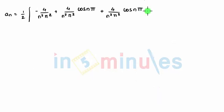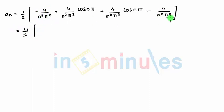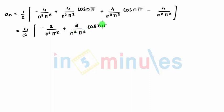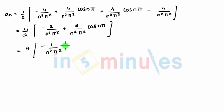Taking 1/2 outside and combining: −4/(n²π²) − 4/(n²π²) gives −2·4/(n²π²) after factoring. Then we have 4/(n²π²)·cos(nπ) + 4/(n²π²)·cos(nπ) terms. Taking 4 common and simplifying, aₙ finally equals 4·[−1/(n²π²) + (1/(n²π²))·cos(nπ)]. That is our aₙ. Now our next work is finding bₙ, so I'll start on a fresh page.